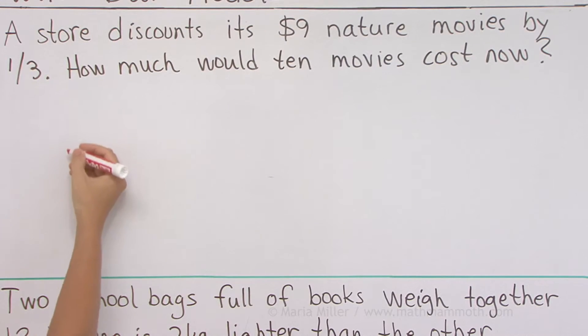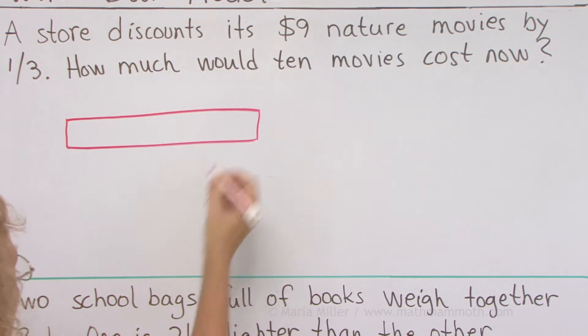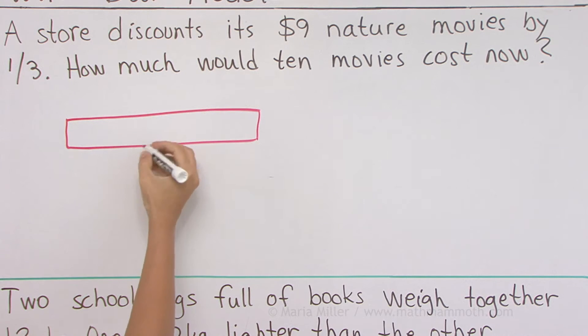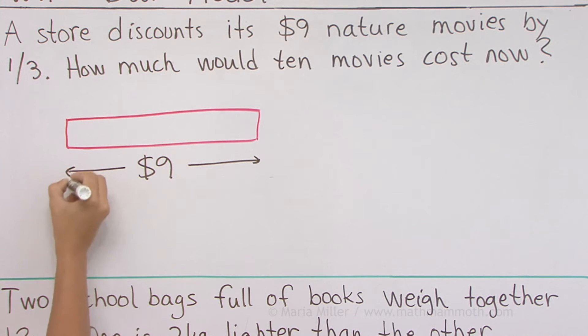If I draw a bar model, it would represent the price now, that $9 price. That's $9 now. Again we have some fractions here, actually one fraction, we have a fraction there.